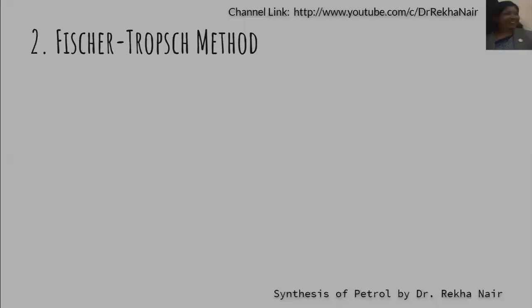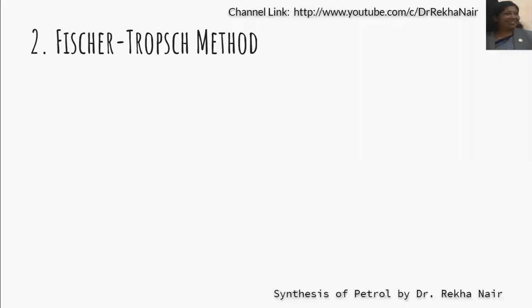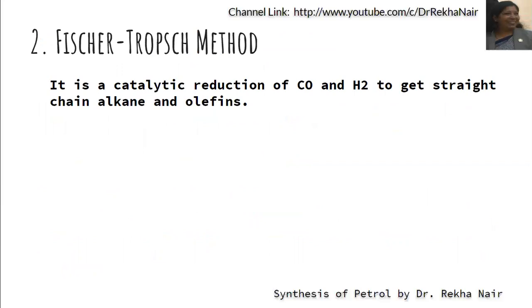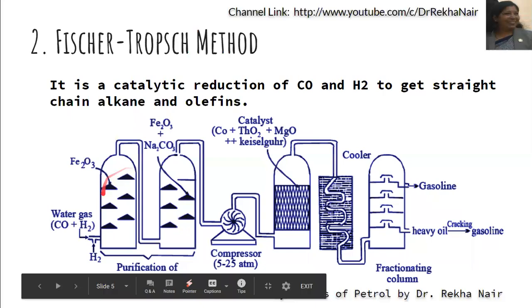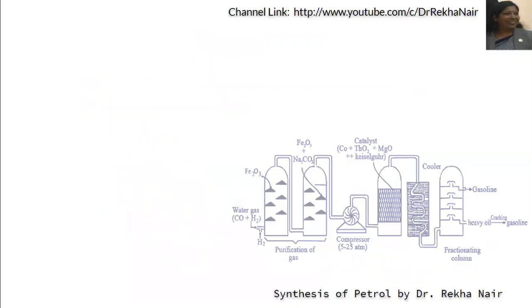The second method is the Fischer-Tropsch method. In this method, carbon monoxide and hydrogen are used and catalytic reduction is carried out to get straight-chain alkanes and olefins similar to gasoline or petrol. The process uses purification chambers, a compressor, a catalytic chamber, a cooler, and a fractionating column.